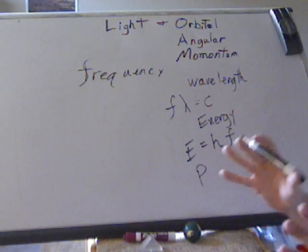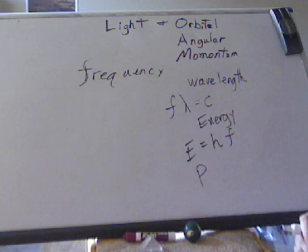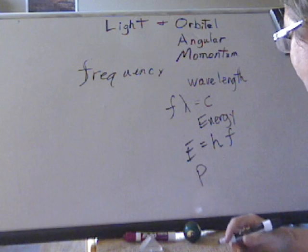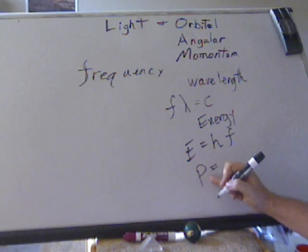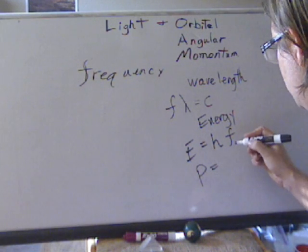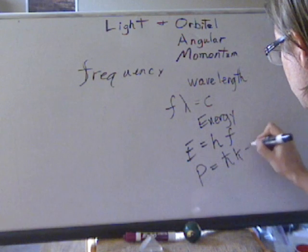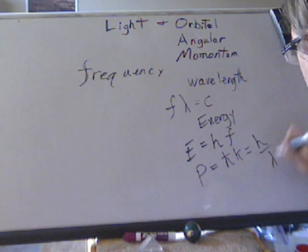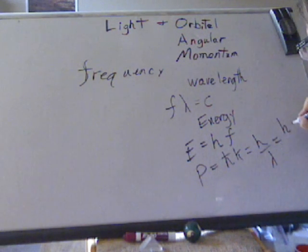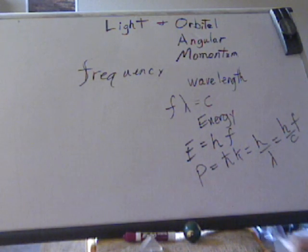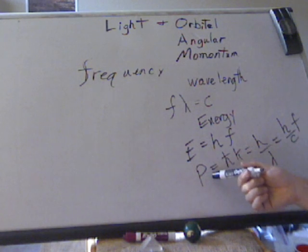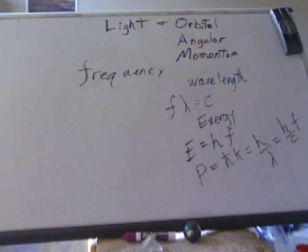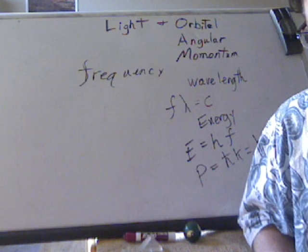Linear momentum — that's the momentum a freight train or a quarterback running on the field has. We use the letter P for momentum. That would be h-bar times k, which goes back to frequency, which goes back to wavelength, the wave vector. So you know this, you know that. We could also talk about the Poynting vector and other ways to get the angular momentum of a group of photons, but that's not necessary in this case.